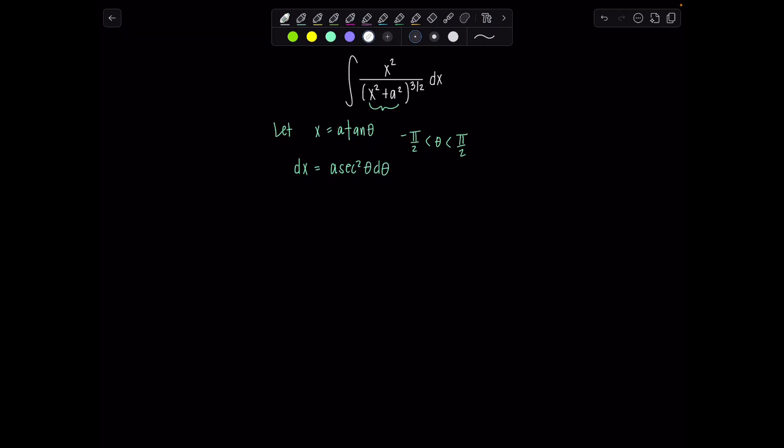So now we're ready, let's go back and rewrite this integral all in terms of theta. In the numerator instead of x squared we'll have a squared tan squared theta, and then in the denominator a squared tan squared theta plus a squared, all to the three halves, and then don't forget this dx gets replaced with a secant squared theta d theta.